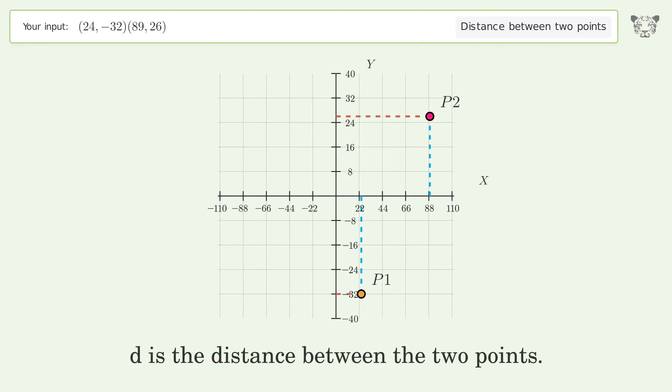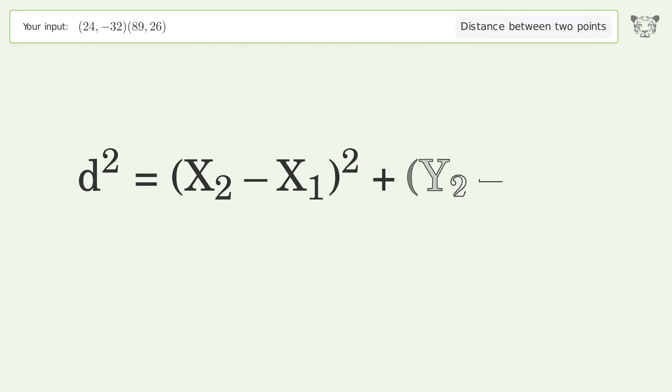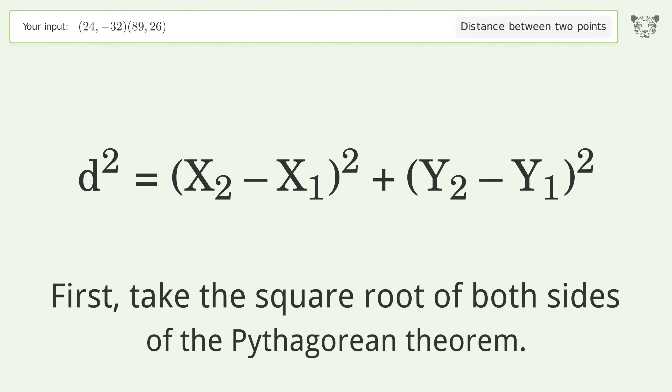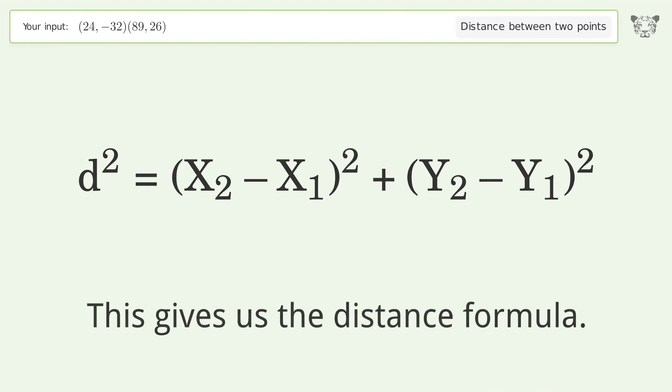D is the distance between the two points. First take the square root of both sides of the Pythagorean theorem. This gives us the distance formula.